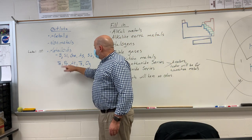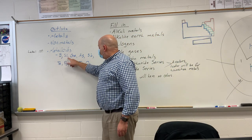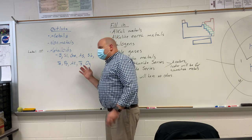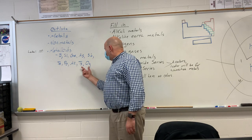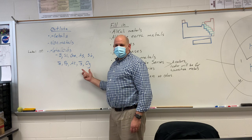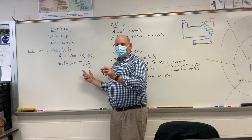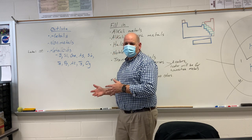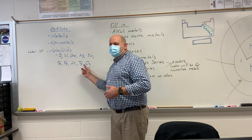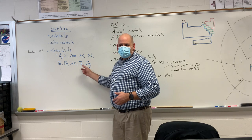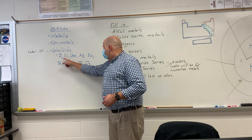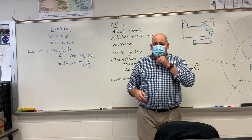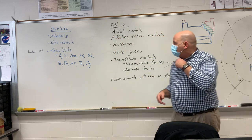The metalloids are boron, silicon, germanium, all the way across. Now technically we really don't know that all of these are metalloids — according to the pattern they should be, but we're not positive, so this is kind of a gray zone. But these other ones at the beginning are definitely metalloids.